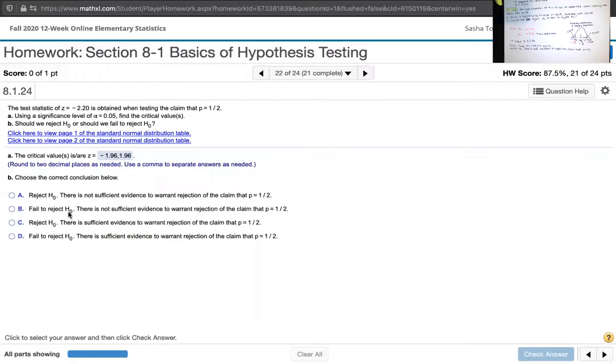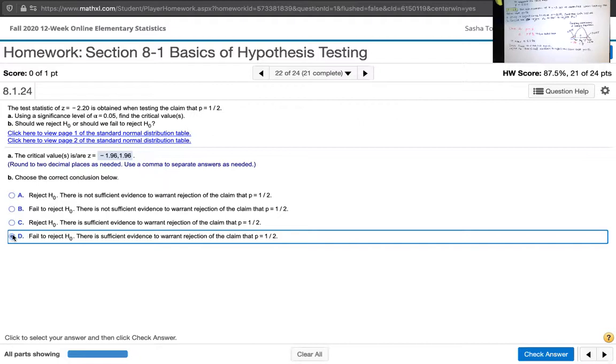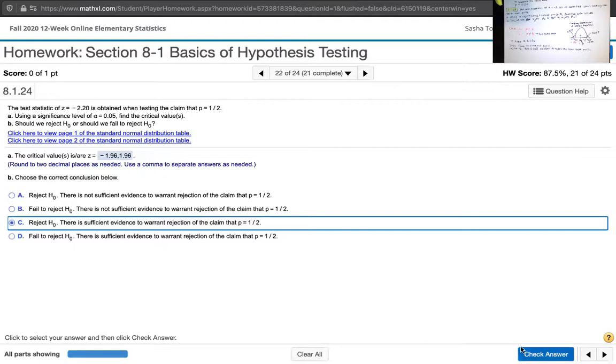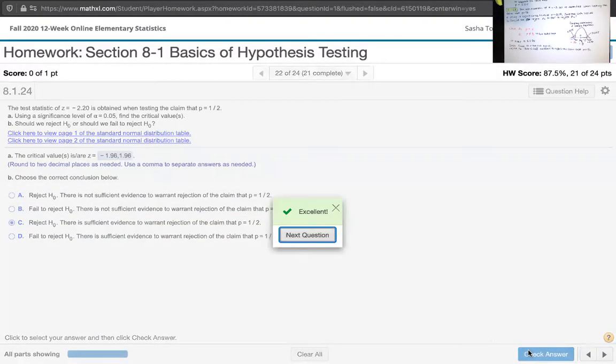Okay, so we are rejecting the null. And we'll say that there is sufficient evidence to warrant rejection of that claim. Rejecting the null, not failing to reject the null. Okay, that's it for that question. Thank you.